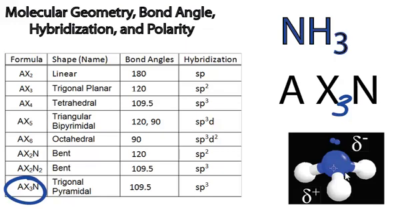So we have the molecular geometry, bond angle, hybridization, and polarity for NH3. Let's try another example.